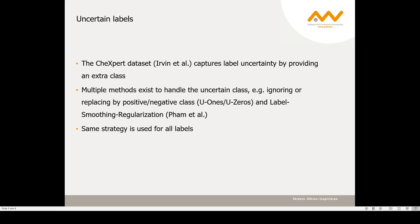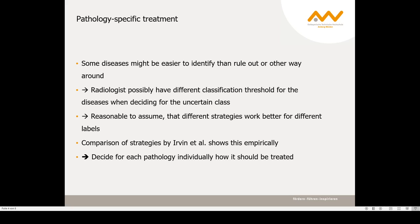In literature, there are multiple methods to handle the uncertain class, for example ignoring, replacing, or using label smoothing regularization. However, the same strategy is used for all the labels. While some diseases might be easier to identify than to rule out, it might be the other way around. Radiologists might therefore have a different classification threshold for diseases when deciding for the uncertain class, and it's reasonable to assume that different strategies work better for different labels.